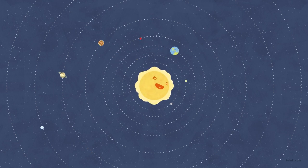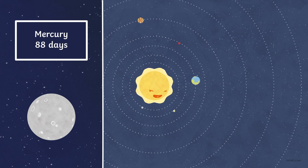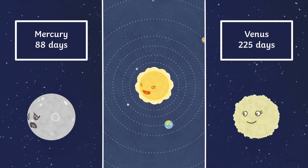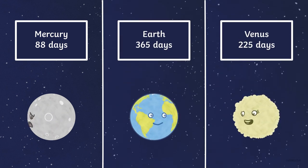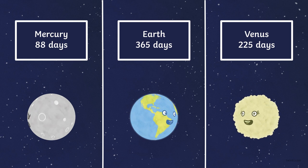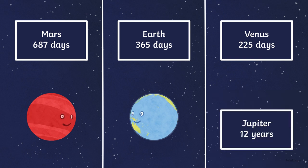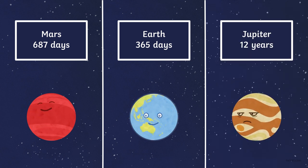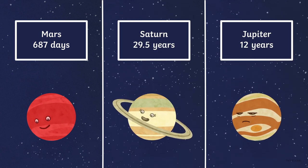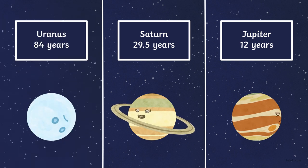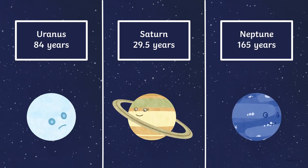Mercury takes 88 days. Venus takes 225 days. Earth takes 365 days. Mars takes 687 days. Jupiter takes 12 years. Saturn takes 29 and a half years. Uranus takes 84 years. Neptune takes 165 years.